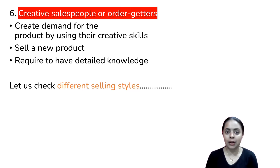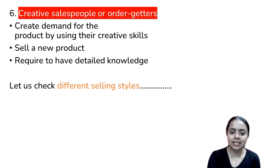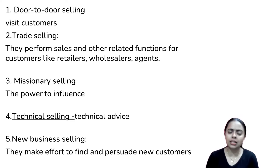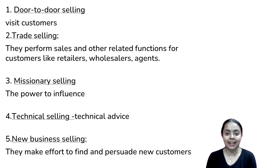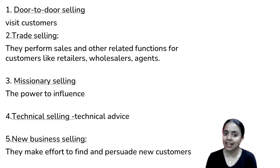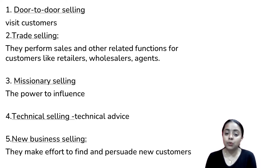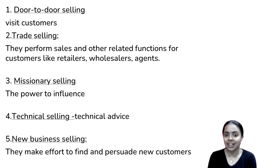There are five selling styles in personal selling. First, door-to-door selling — going directly to the customer. Second, trade selling — selling to wholesalers, retailers, and agents. Third, missionary selling — guiding, teaching, educating, and influencing. Fourth, technical selling — giving technical advice to impress customers. Fifth, new business selling — using different activities and techniques to create business with different customers.